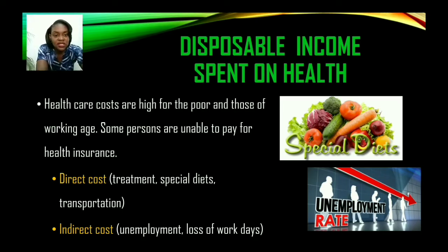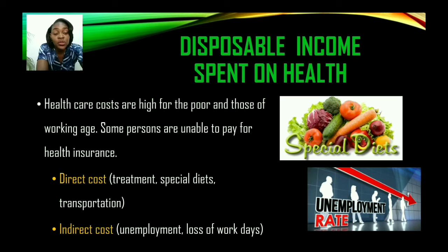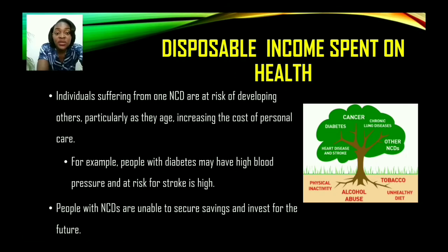There are direct costs and indirect costs that affect disposable income. Direct costs include treatments, special diets, and transportation to and from medical facilities — all of which reduce family income. Indirect costs include unemployment or loss of work days, where persons may have to stay home because they are not feeling well, or eventually lose their jobs, causing unemployment to rise and leaving them with less money to spend.